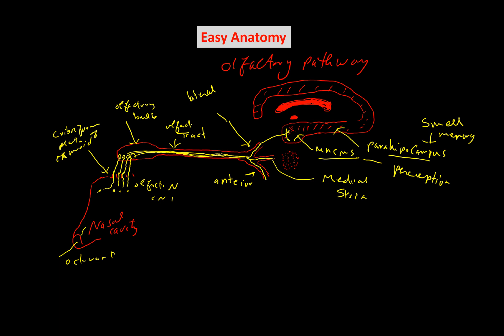The medial stria goes to association areas related to some reaction to the smell, such as the hypothalamus and the anterior perforated substance — which is perforated by central branches from the cerebral arteries. It can also send fibers to the amygdaloid nucleus and the limbic system, including the cingulate gyrus.